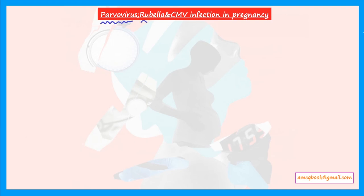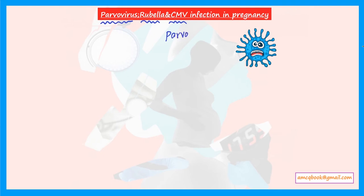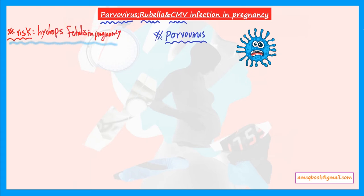Parvovirus, Rubella, and Cytomegalovirus infection prevention in pregnancy. These three topics are very important, so please focus. Regarding parvovirus infection: what is the risk to the fetus in pregnancy? The risk is hydrops fetalis. Consider a pregnant woman who has had contact with a parvovirus-infected child — how do we deal with her and her fetus?